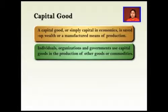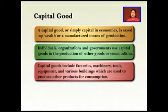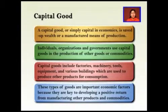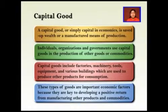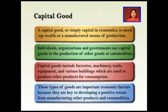Capital goods include factories, machinery, tools, equipment, and various buildings which are used to produce other products for consumption. Capital goods are products which are not produced for immediate consumption. Rather, they are objects used to produce other goods and services. These types of goods are important economic factors because they are key to developing a positive return from manufacturing other products and commodities.